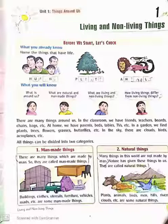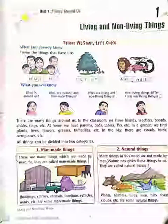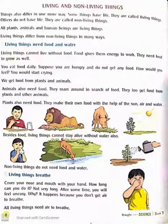So all these things can be divided into two categories. The first is man-made things and the second is natural things. The things which are made by man are called man-made things — for example, buildings, clothes, utensils, furniture. And the things which are not made by man but are given to us by nature are called natural things — for example, plants, animals, birds, men, hills, rivers, clouds, etc.